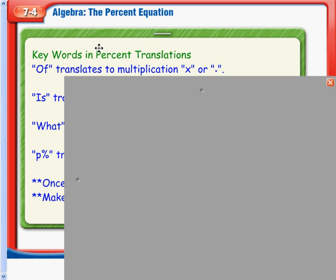So in this sense here, doing the Percent Equation, we are going to be translating our words similar to what we did in 7-2. However, in this case, we don't have a straight setup. We're going to use the words to make our equation. So of is going to always translate into multiplication.